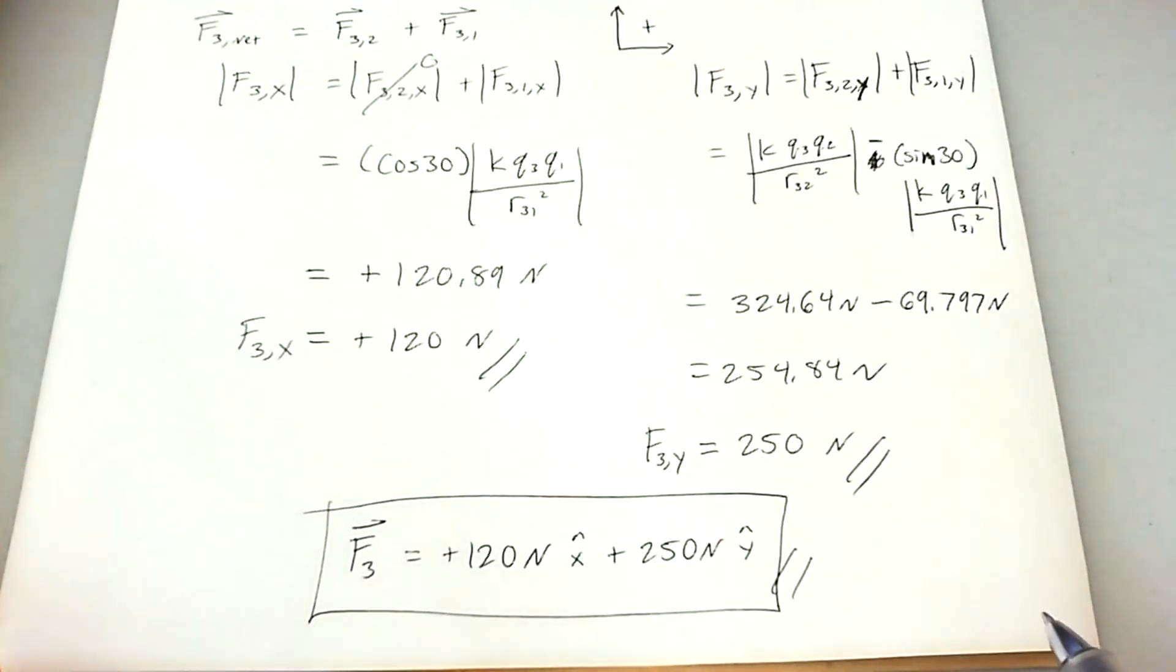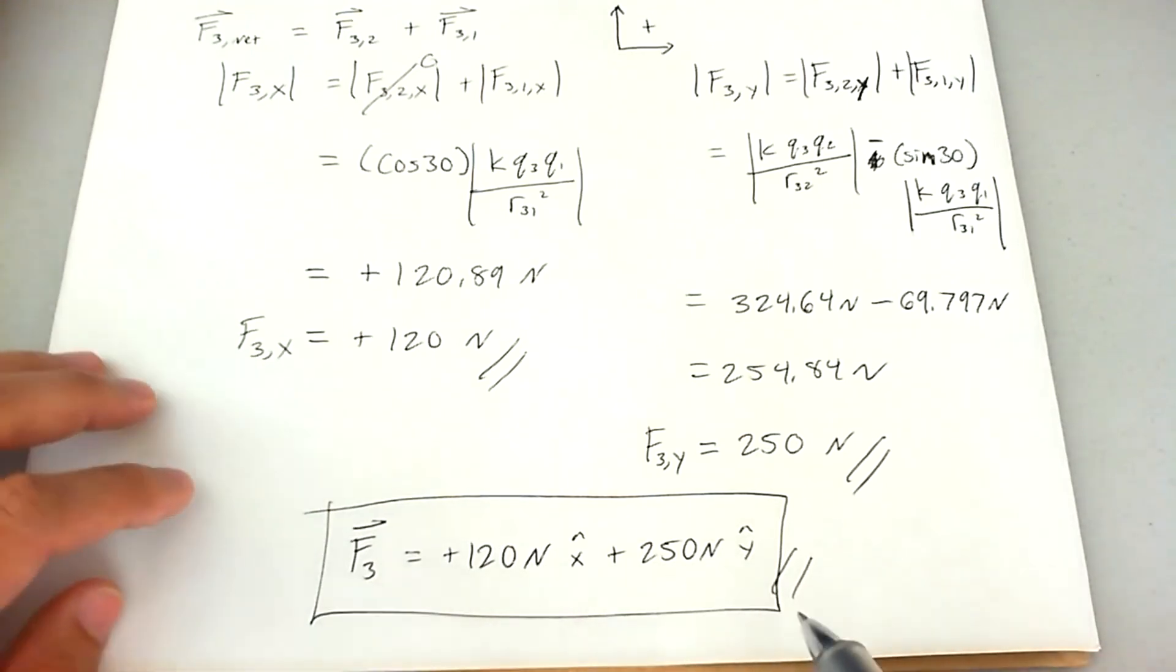You can also write it in magnitude direction form. And that takes a little bit more math. You basically have to take the hypotenuse of this and use a trigonometric function in order to find the angle in which the force will point relative to the horizontal. But this is the easiest way. It's the component method.